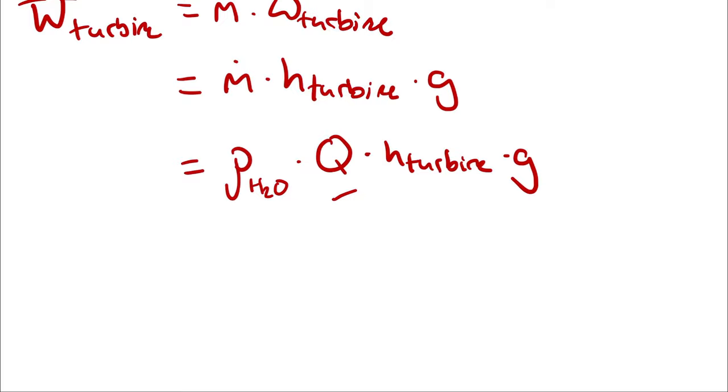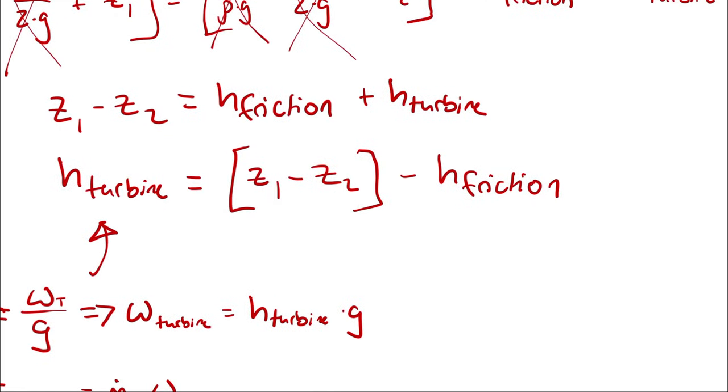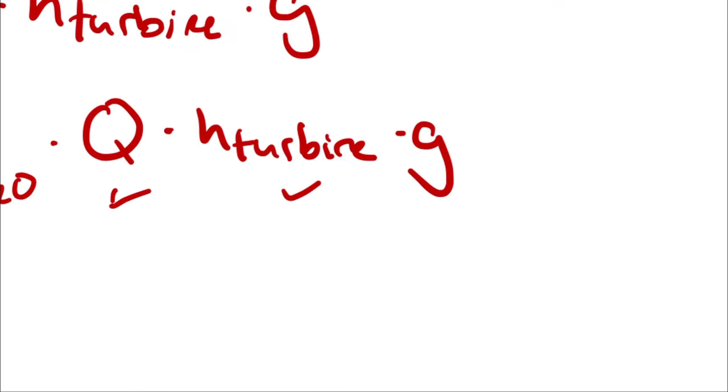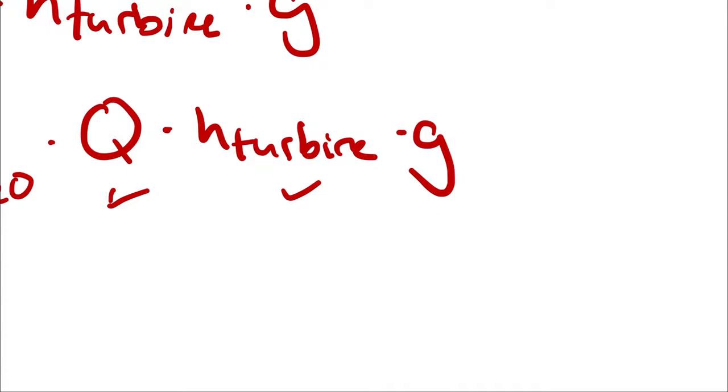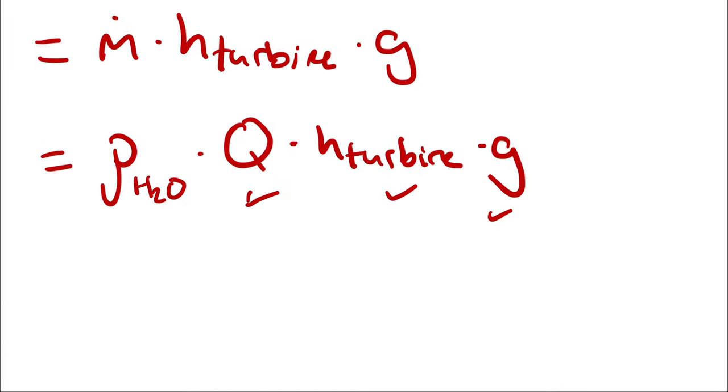We know this. We were given it. We know the turbine head because we know all three of these variables up here. We can assume gravitational acceleration, and we can assume a temperature of water and then look up that density of water.